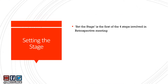There are four steps involved in a retrospective meeting, and the first one is called 'set the stage.' We are going to discuss two tools and techniques you can use when setting up the stage. What you are essentially doing is making sure that people talk to each other.